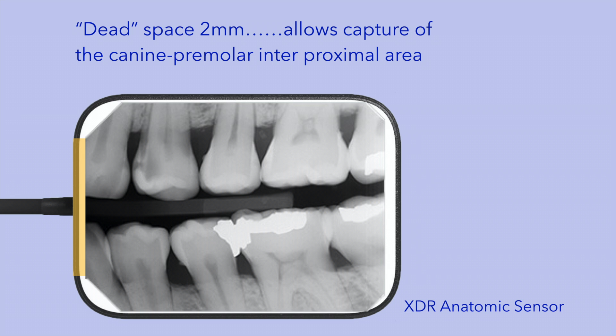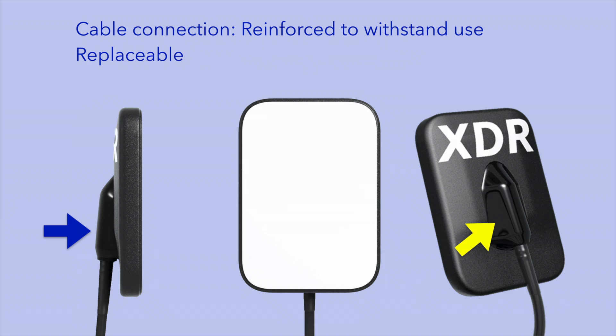This is an important feature that plays into your decision as a consumer of CCDs. The data captured by the imaging chip in the sensor is transmitted to a computer via a cable and a USB connection. If the sensor is not handled properly, the connection of this cable to the sensor can fail.